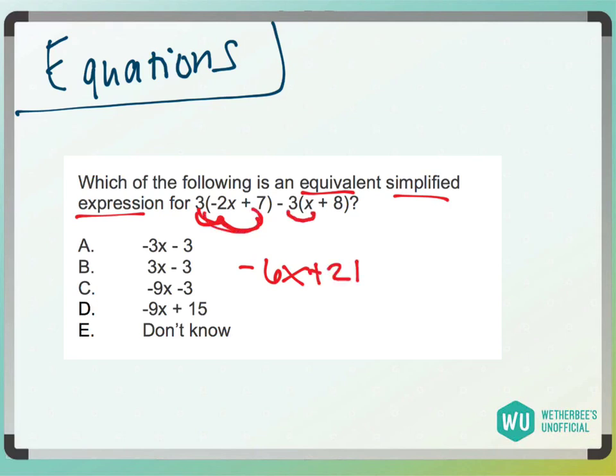Then we have negative 3 times x, which is minus 3x. And then negative 3 times 8, which is negative 24.